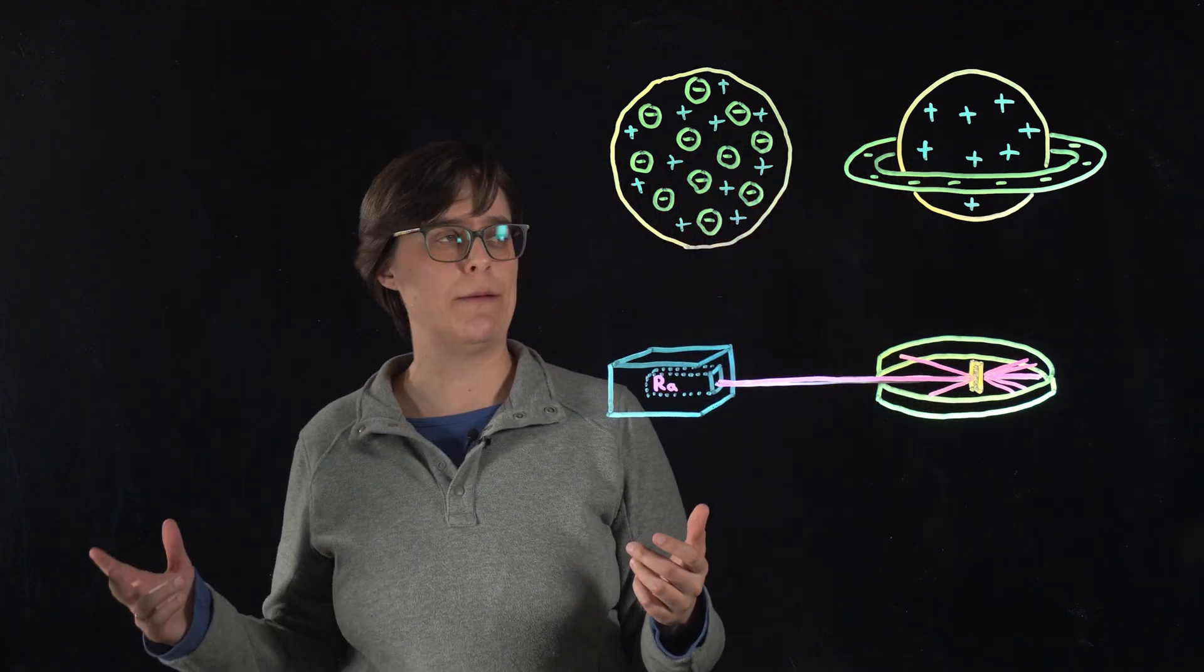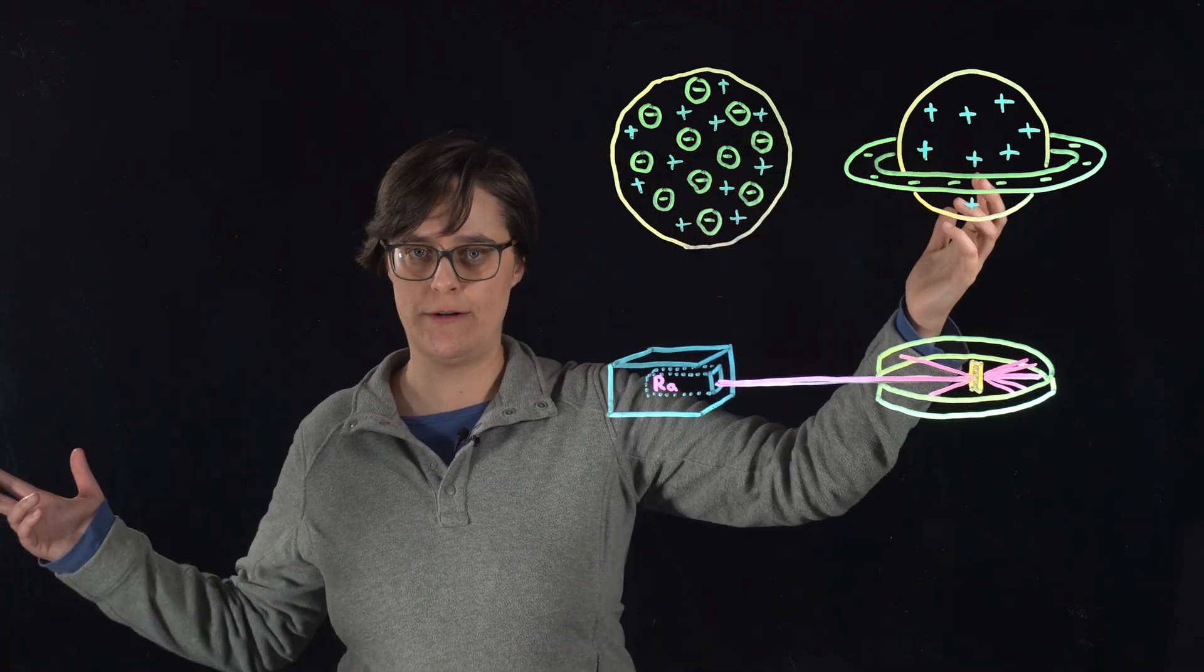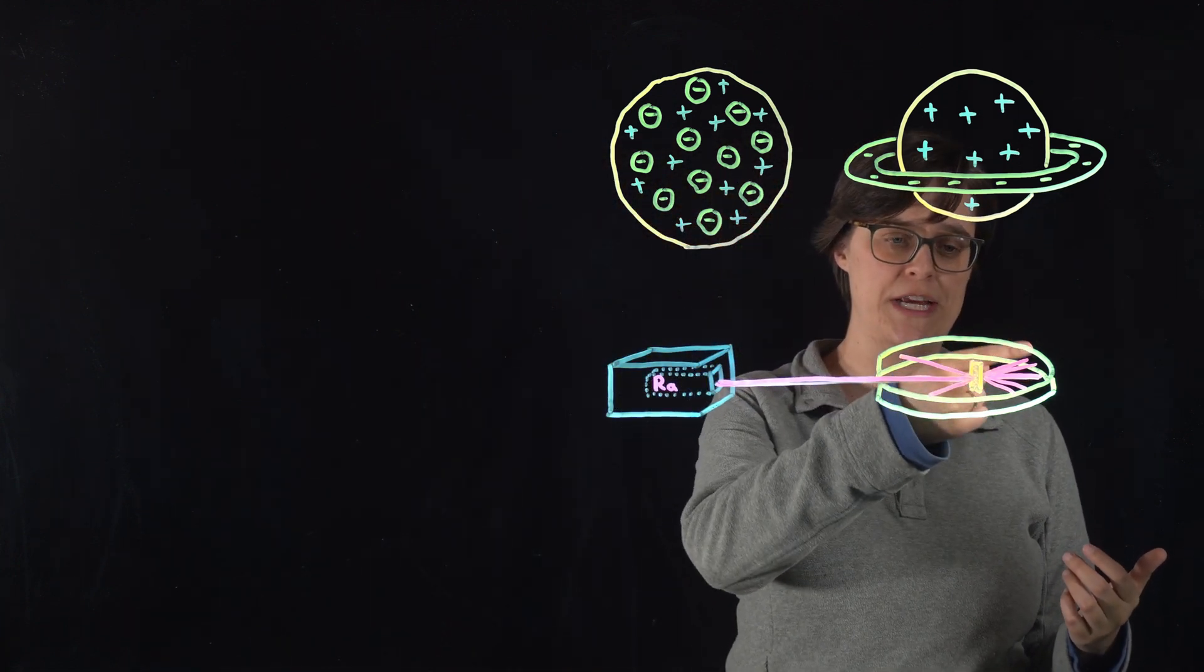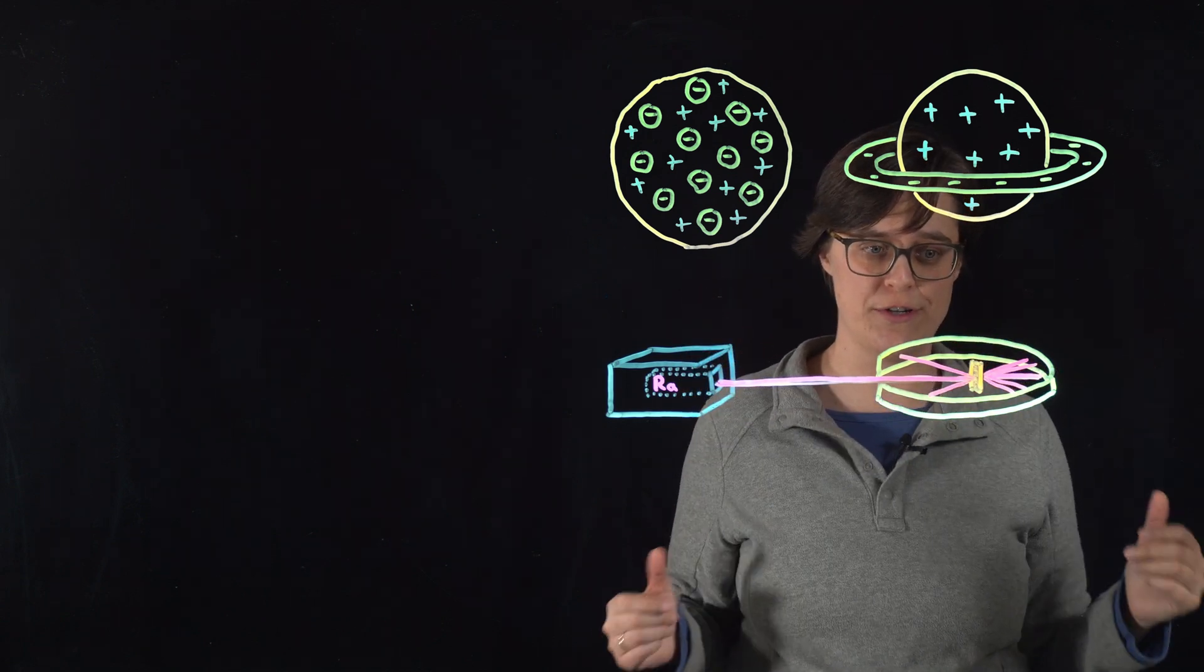What would happen if Hantaro Nagaoka's Saturn-like atom is correct? We could see a case for a bit more of a change in trajectory, just because of the separation of charges.